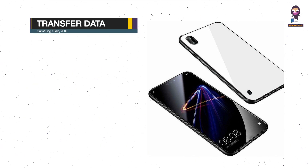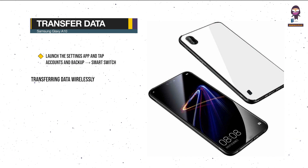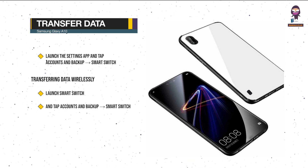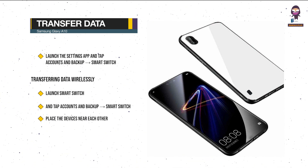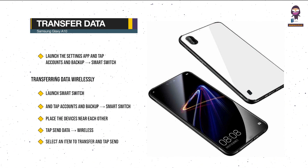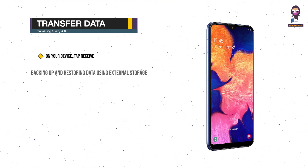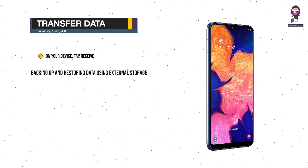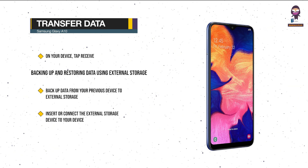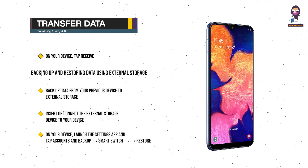Transferring data from your previous device: launch the Settings app and tap Accounts and Backup, then Smart Switch. To transfer data wirelessly, on the previous device launch Smart Switch. On your device, launch the Settings app and tap Accounts and Backup, then Smart Switch. Place the devices near each other. On the previous device, tap Send Data, Wireless, select an item to transfer, and tap Send. On your device, tap Receive. For backing up and restoring data using external storage, backup data from your previous device to external storage, then insert or connect the external storage device to your device. Launch the Settings app and tap Accounts and Backup, Smart Switch, then Restore.